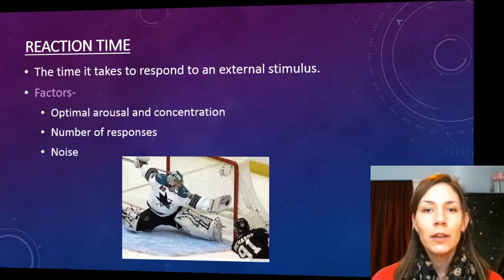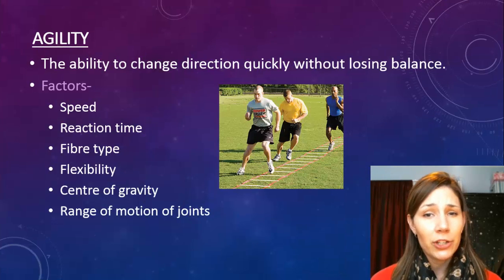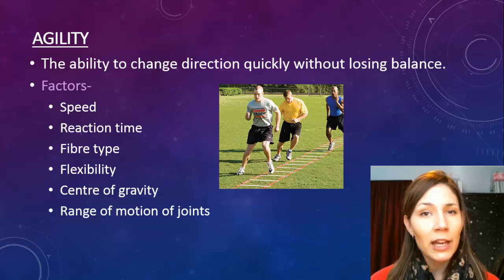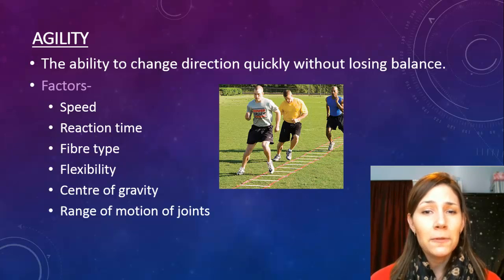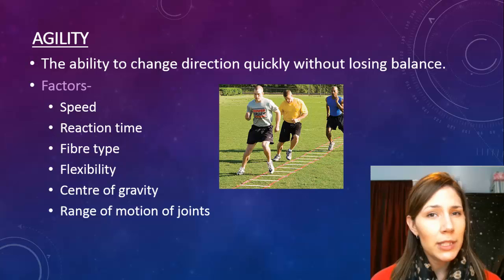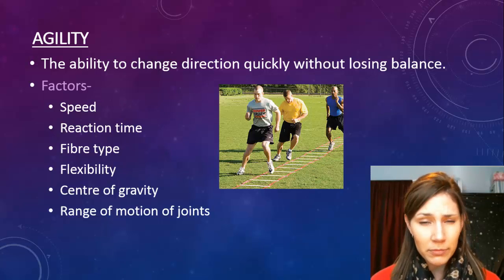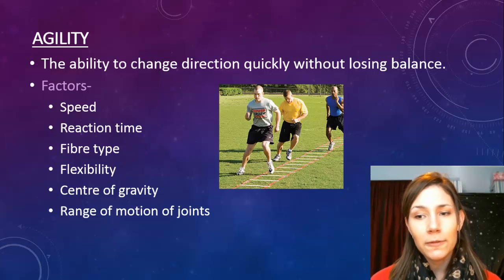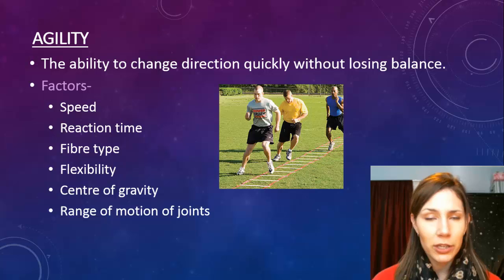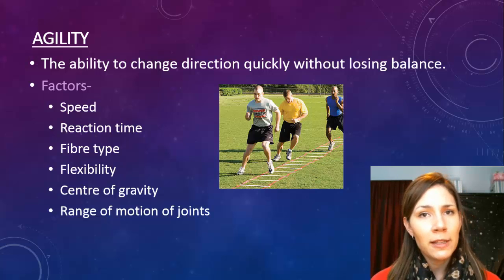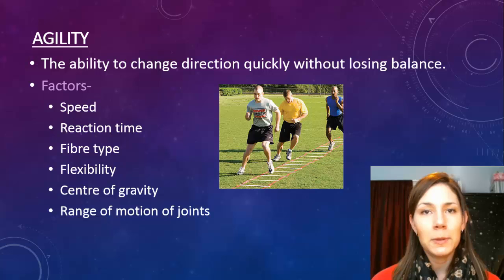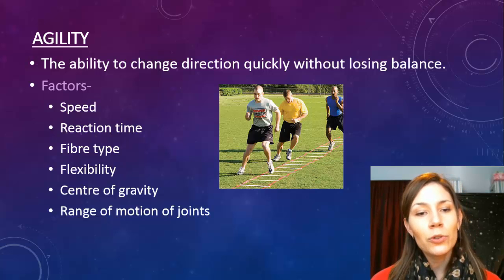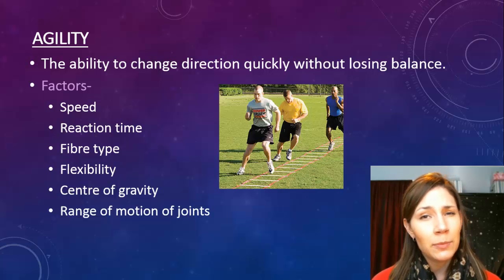Agility is the ability to change direction quickly without losing balance — and not losing balance is the key. Factors that influence it include your speed, how quickly you can move, and your reaction time, since reacting faster allows you to be more agile. Fiber type matters again — you want those fast twitch muscle fibers to move quickly. And your center of gravity: the lower it is, the better your stability and the more agile you can be.